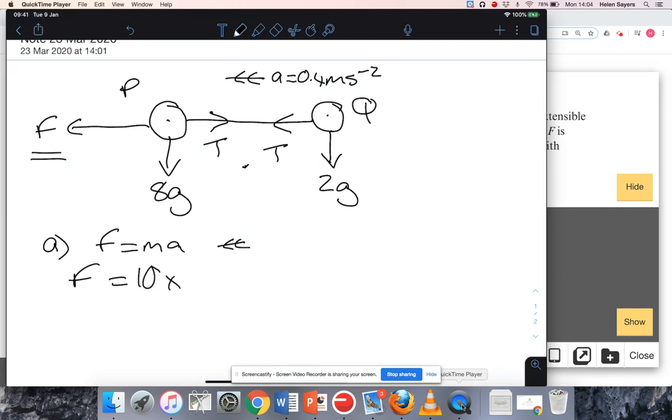I'm told in the question that they're accelerating at a rate of 0.4 meters per second squared. So quite a simple calculation, the force is 10 times 0.4, which gives us 4 Newtons.